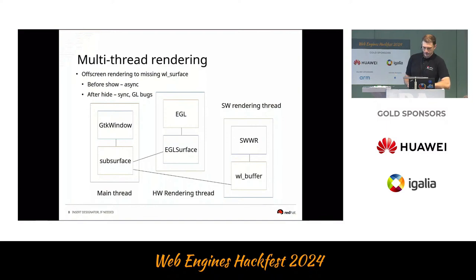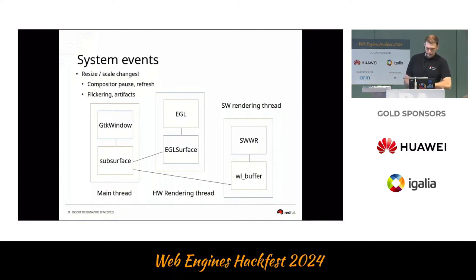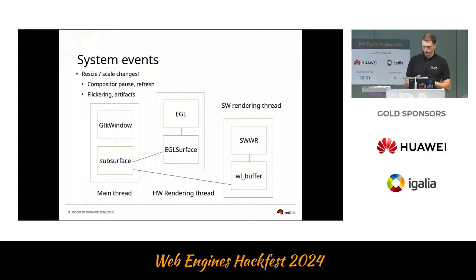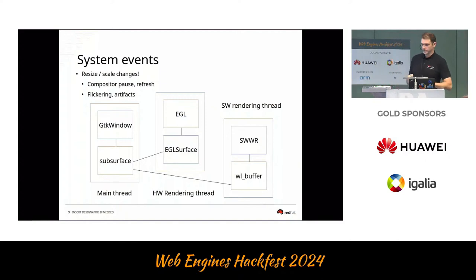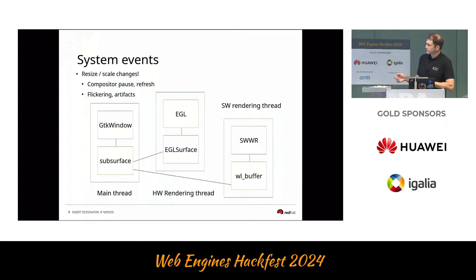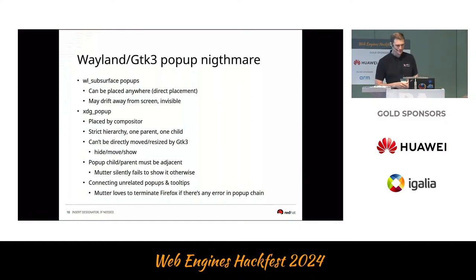This is less complicated for software rendering. Another complication is system events like window resize or scale change — you need to handle them fast because if you paint to a surface with a different scale than what's on screen you also get protocol errors and application crashes. So if you get a scale change from the main thread you need to synchronize it with the rendering thread via EGL, stop the rendering, change the size of the window and surface, and then return back to the main thread.